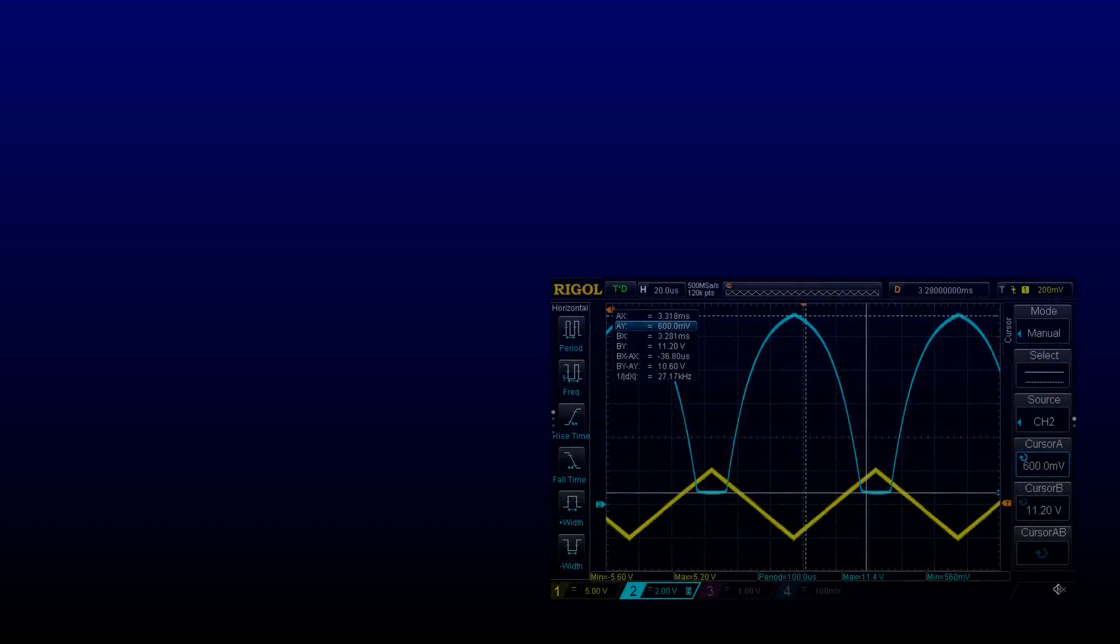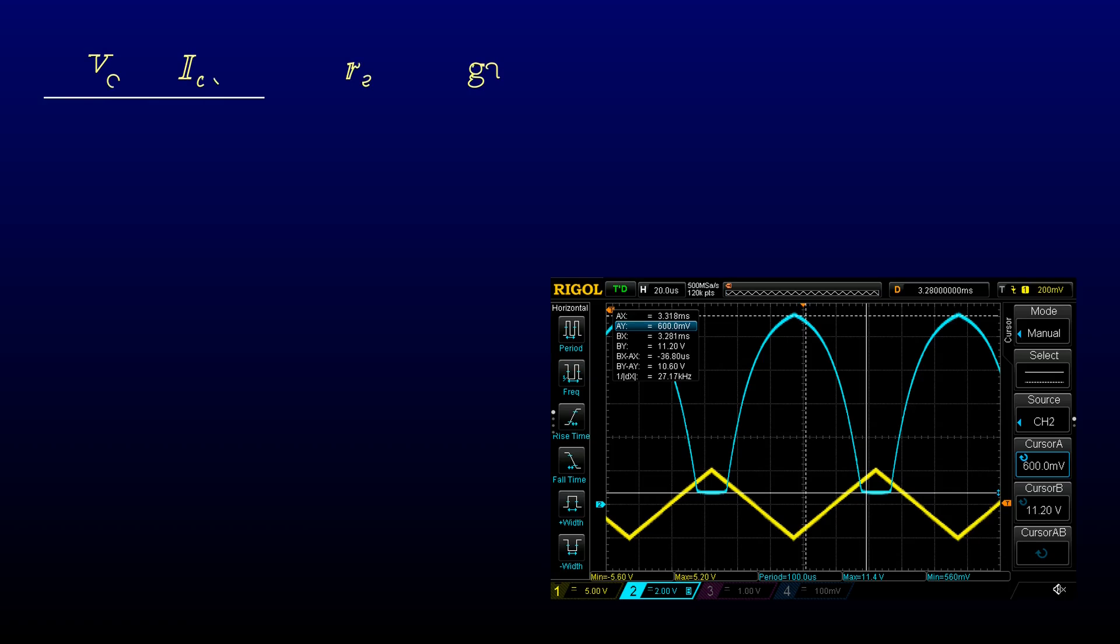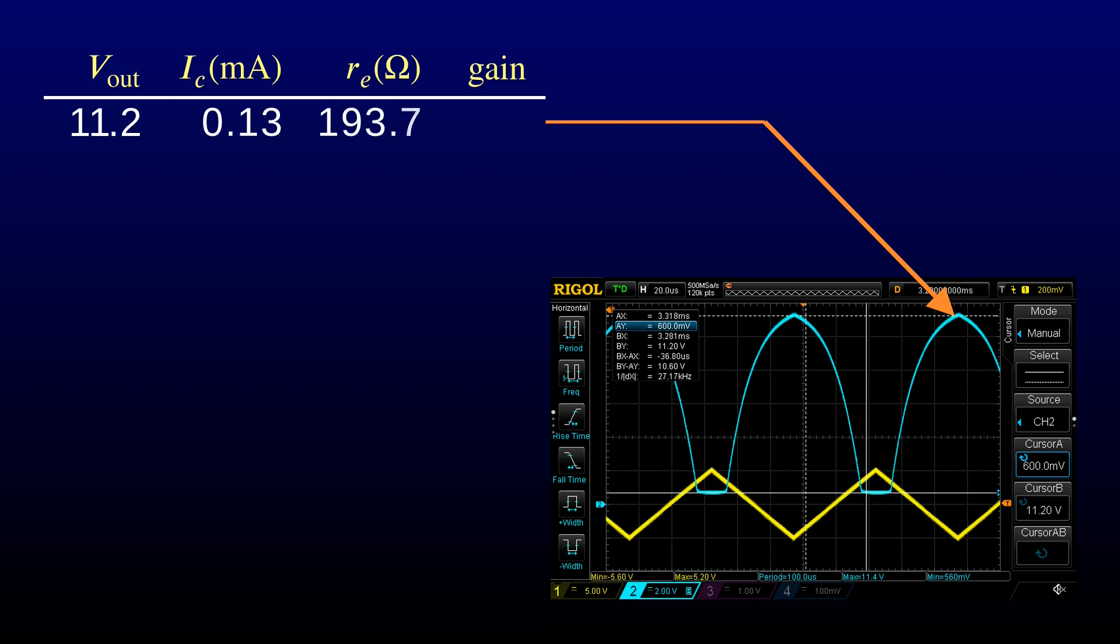Now we can look at the waveform that we got from the problem amplifier. Let's see what happens to the gain at various points in the cycle. When the input voltage is at its lowest, the transistor is nearly cut off. That makes the output voltage high. 11.2 volts is only 0.8 volts below the supply rail. The collector current is that 0.8 volts divided by the 6.2k collector resistor. The intrinsic emitter resistance is the 25 millivolt thermal voltage divided by that current. The gain will be the collector resistor divided by that intrinsic resistance.